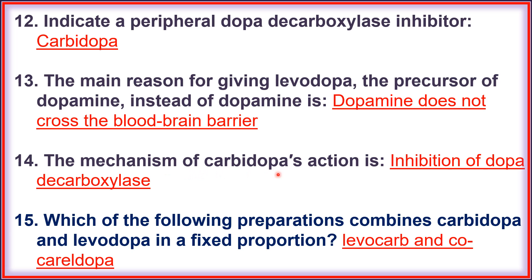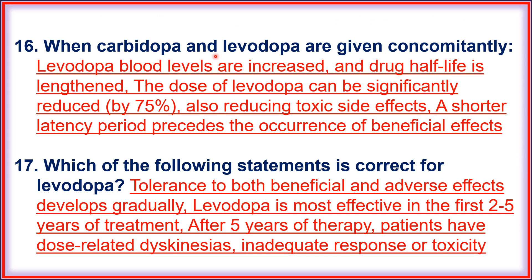Question fourteen: the mechanism of carbidopa action is inhibition of dopa decarboxylase. Question fifteen: the preparation combining carbidopa and levodopa in a fixed proportion is levocarb or co-careldopa. Question sixteen: when carbidopa and levodopa are given concomitantly, levodopa blood levels are increased and drug half-life is extended. The dose of levodopa can be significantly reduced by 75%, also reducing toxic side effects, and a shorter latency period precedes the beneficial effects.